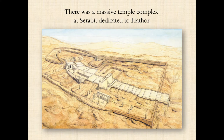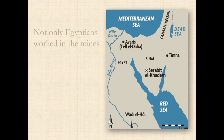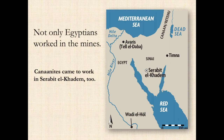There's this huge temple complex that had been built and was occupied for over 800 years, perhaps longer, dedicated to the worship of Hathor because she is the patron goddess of miners in this place where mining for turquoise was going on. Not only Egyptians worked in the mines — Canaanites also came to work at Serabit al-Khadem. They came down from the area near the Dead Sea, Canaan, and came down to work there.